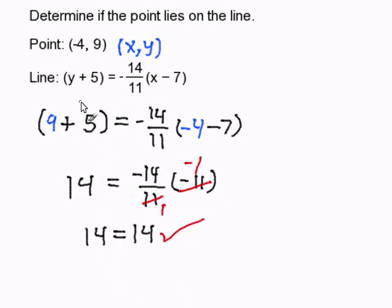And the values for my ordered pair works in my equation. Therefore, this line contains the point negative 4 comma 9. And this completes my problem.